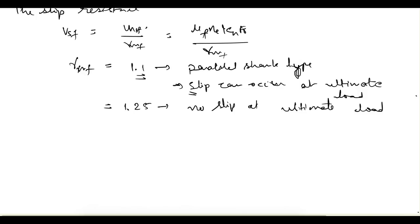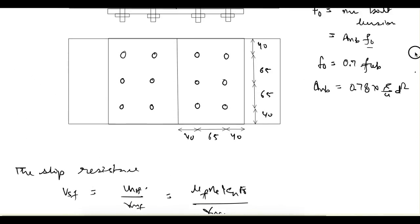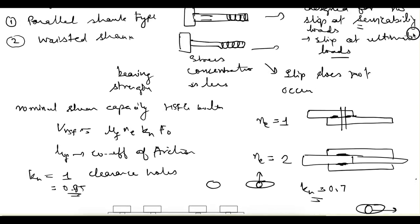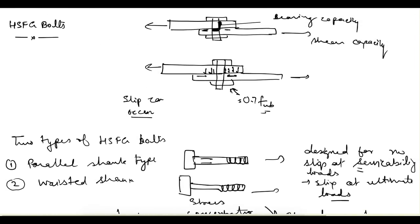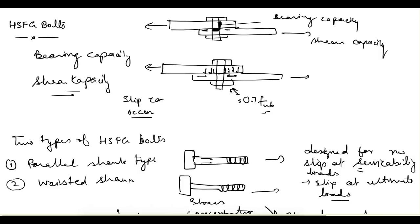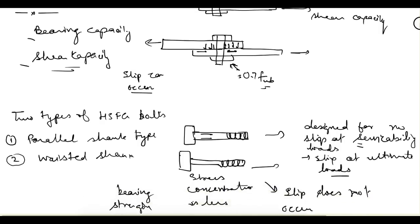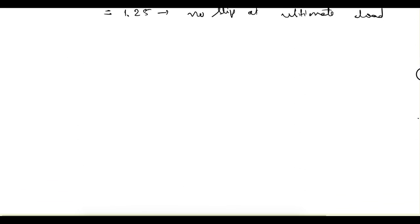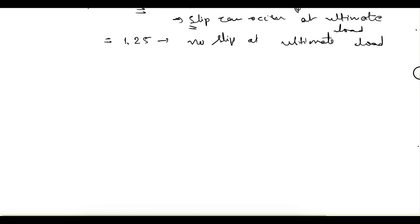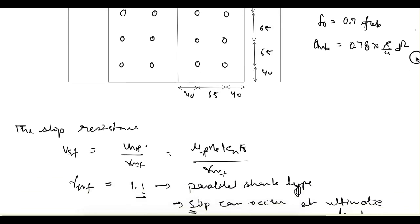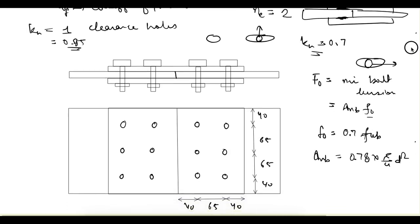If slip can occur at ultimate load, bearing must also be checked. For checking bearing, we go back to the previous formulae: one for bearing capacity and one for shear capacity. The minimum of these two gives the bearing strength of the bolt, and that should be greater than the applied load for safe design. That covers how we find the slip resistance or shear resistance of HSFG bolts.